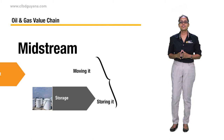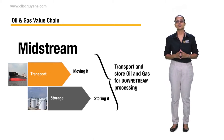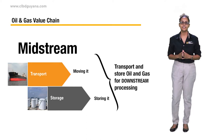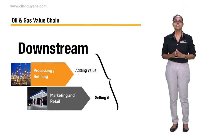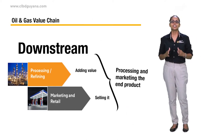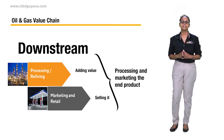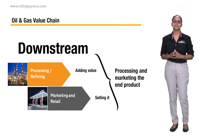Midstream includes activities to transport and store oil and gas for downstream processing activities. Activities downstream include processing and finally marketing the end product for retail — for example, selling into Guyanese markets via gas stations.